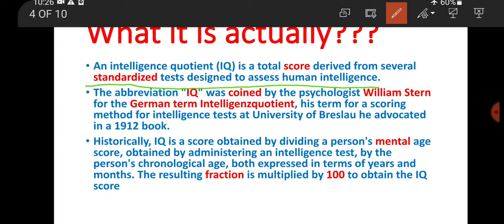The term IQ was coined by the famous German psychologist William Stern. He had a German term called 'Intelligent Quotient,' shortened to IQ. He was working on his scoring method at the University of Breslau and published his book in the 1920s.